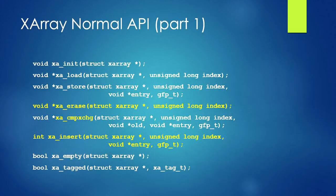XA_erase removes an entry from the array. It's the exact equivalent of calling XA_store with null as the third argument, but this is such a common thing to want to do that it really warrants its own function. It's just a static inline function — the compiler replaces all that for you — but it helps the person writing code, and that's what I'm all about.